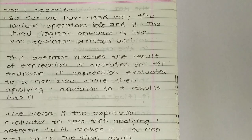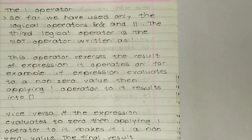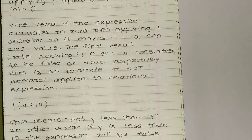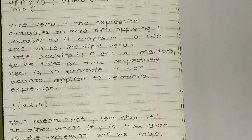Applying the NOT operator results in zero. That means if the value is non-zero, it will become zero. Vice versa, if the expression evaluates to zero, then applying the NOT operator to it makes it one.